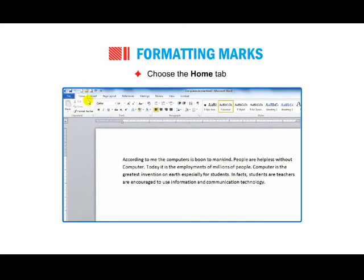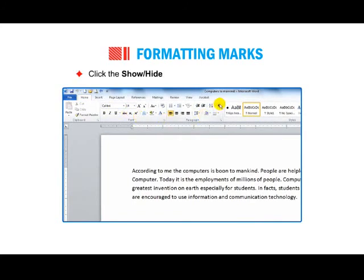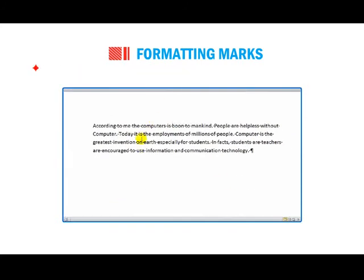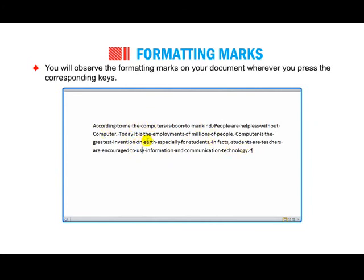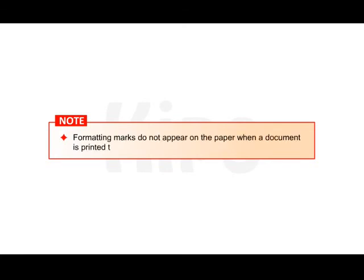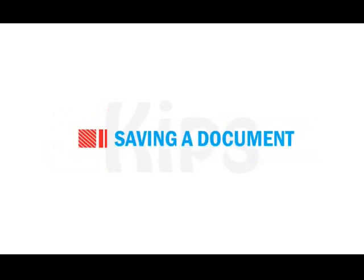To display formatting marks, choose the Home tab and click the Show or Hide button in the Paragraph group. You will observe the formatting marks on your document wherever you press the corresponding keys. Note: Show or Hide is a toggle button. Formatting marks do not appear on paper when a document is printed — that is why they are known as non-printing characters.